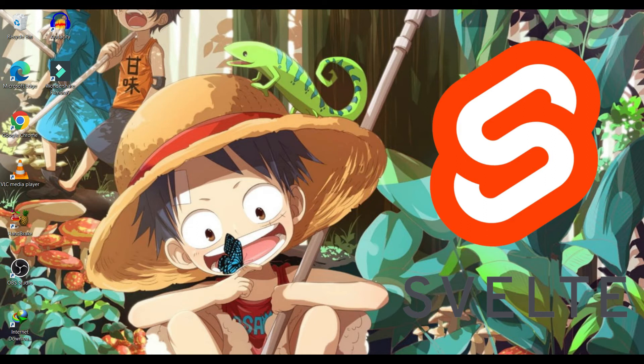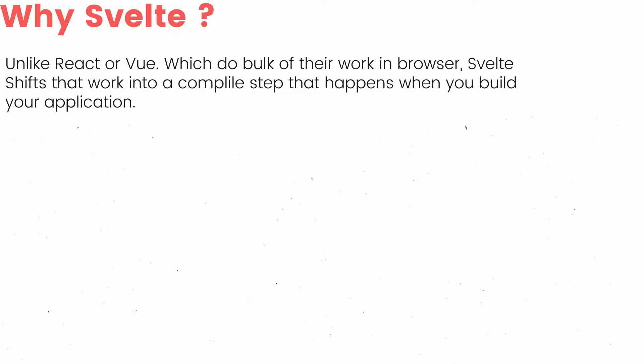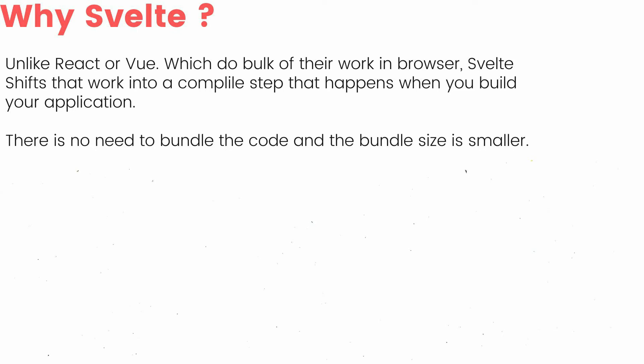So Svelte is a component framework for building web applications, and you can use it to progressively build an existing application or build an entire single page application from scratch. But the more interesting question is why Svelte — how is Svelte better compared to other frameworks or libraries like React and Vue? Unlike React or Vue which do a bulk of their work in the browser, Svelte shifts that work into a compile step that happens when you build your application. Because of this, there is no need to bundle the framework code, and so the bundle size is smaller.